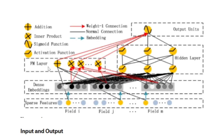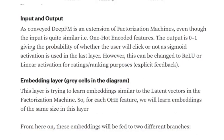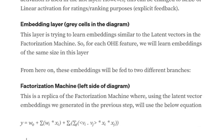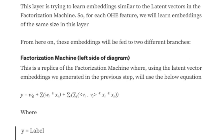Once we have generated embeddings for each feature, we divide the architecture into two parts: one is the factorization machine part, and the other is the DNN part. The input is quite similar to what goes into a factorization machine — that is, the one-hot encoded features. Once the embedding layer is generated, the embeddings are then passed on to two parts: the factorization machine component on the left side of the diagram, and the DNN on the right.